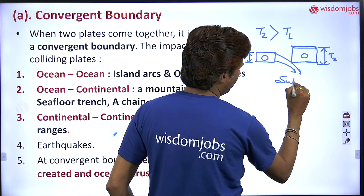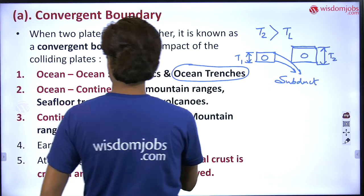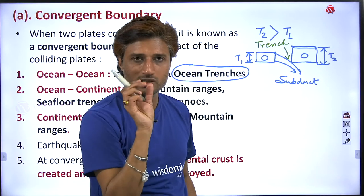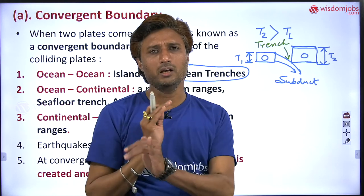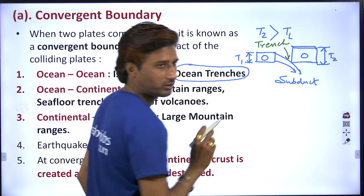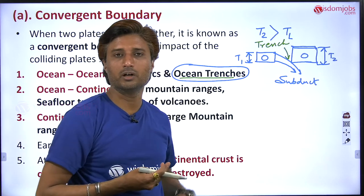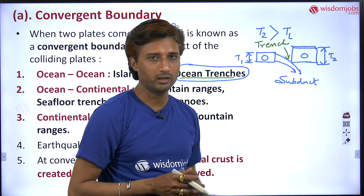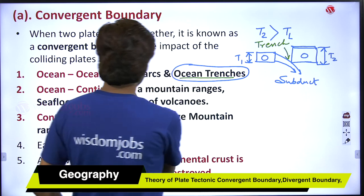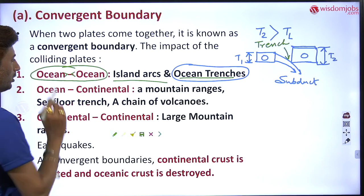Because it is going to subduct, oceanic trenches will be formed — that is the output, trenches. In simple terms, it is like a valley formed in the ocean. It will form ocean trenches and island arcs. You will find oceanic trenches in the Pacific Ocean, like the Mariana Trench or the Philippine Trench. Island arcs form as well — for example, Indonesia. When they collide, island arcs are formed.